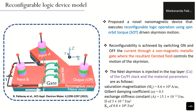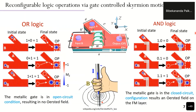For OR logic operation, the metallic gate is in open-circuit configuration, meaning no Oersted field is created near the gate. When a skyrmion is nucleated and driven by current, it reaches the output. When two skyrmions are present at inputs A and B, only one skyrmion can reach the output due to topological repulsion between the two skyrmions.